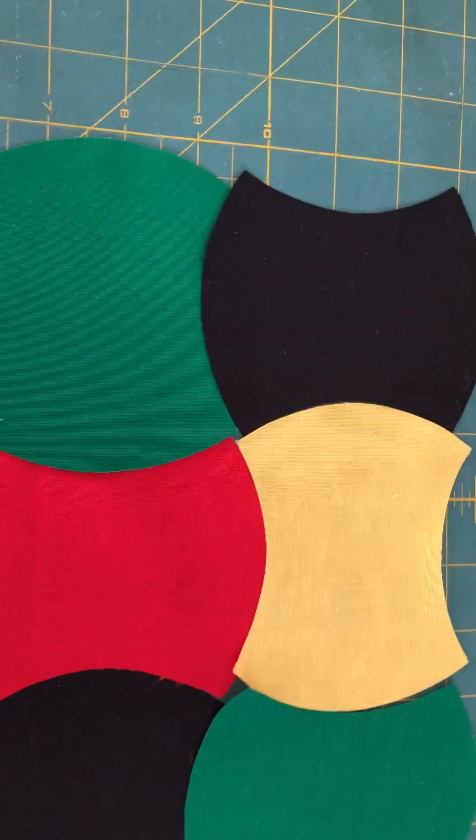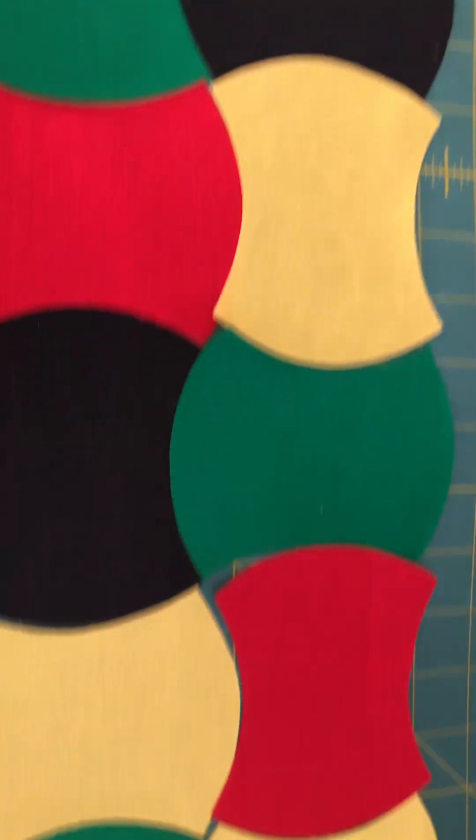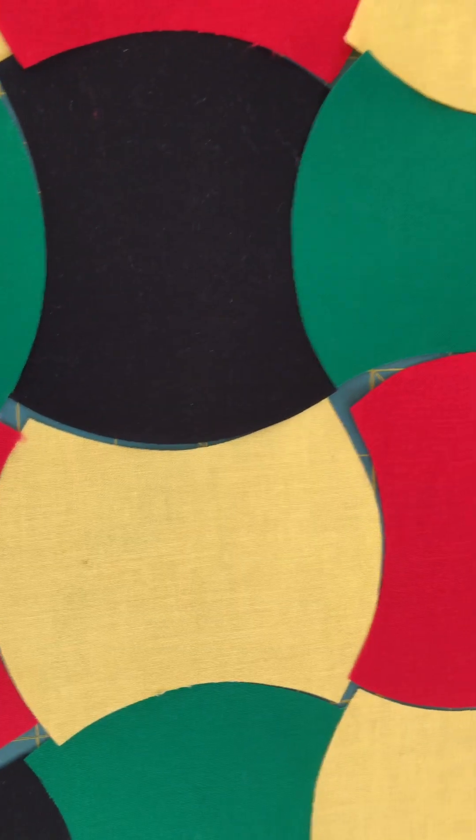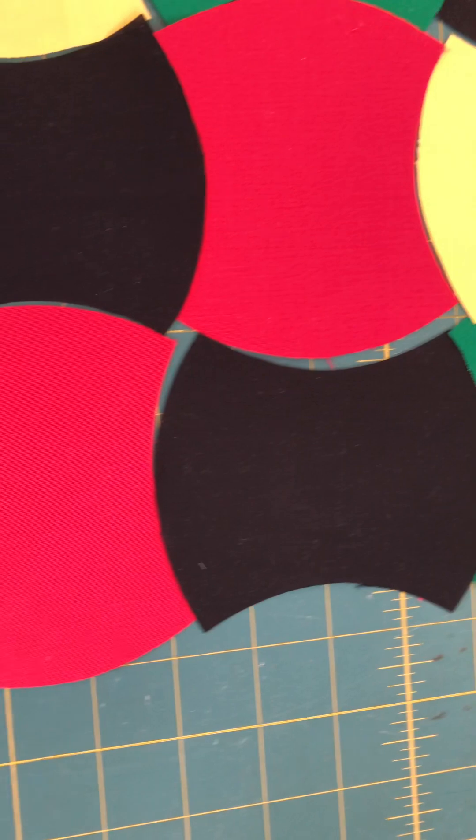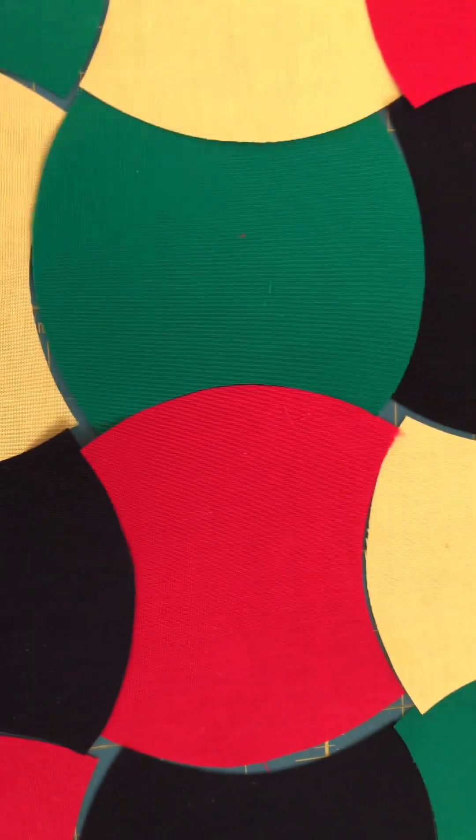So I'll sew them in four patches. That'll be a four patch right there and I'll be left with these two. So I flip them over and sew them on top of this four patch.